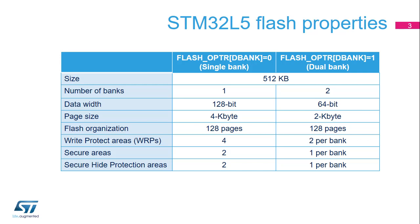This feature enables the programming or erasing of one bank while executing code from the other bank. The page size, which provides the minimum erase granularity, is 4 kilobytes with a single bank and 2 kilobytes with dual banks. The number of pages is 128. The flash interface offers four write protect areas in single bank mode, two per bank in dual bank mode.